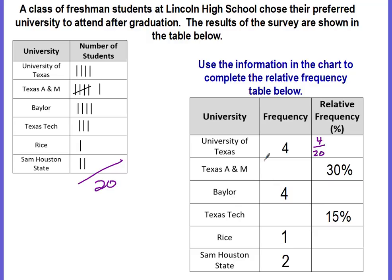What is our scale factor? We need to change the 20 to 100, so the scale factor is to multiply by five. When we multiply by five, it gives us 20 out of 100. Anything out of 100 we can write as a percent, so this is 20 percent.